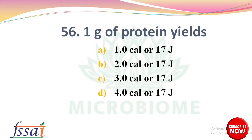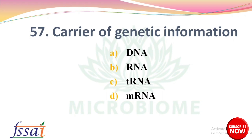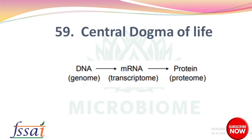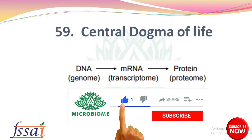One gram of protein yields — options: 1 calorie, 2 calories, 3 calories, 4 calories. The right answer: option D, 4 calories/17 joules. Next: carrier of genetic information — options: DNA, RNA, tRNA, mRNA. The right answer: option A, DNA. Next: an intermediate in the expression of genetic information and other diverse roles — options: RNA, DNA, lysosome, Golgi apparatus. The right answer: option A, RNA.